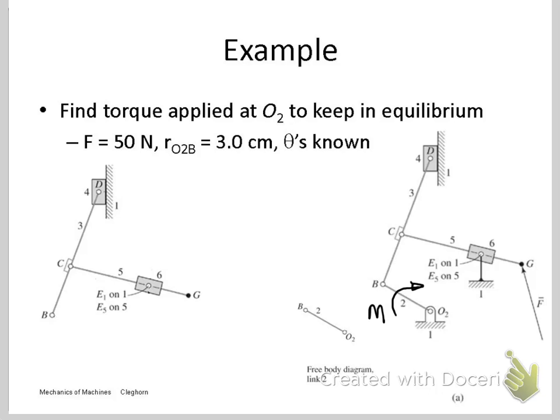So let's first look at member 5, which is member CG. And we know a force and a magnitude of that force on that member, being the force F. And we know the line of action of that force. So we can start at that point with something that's known.